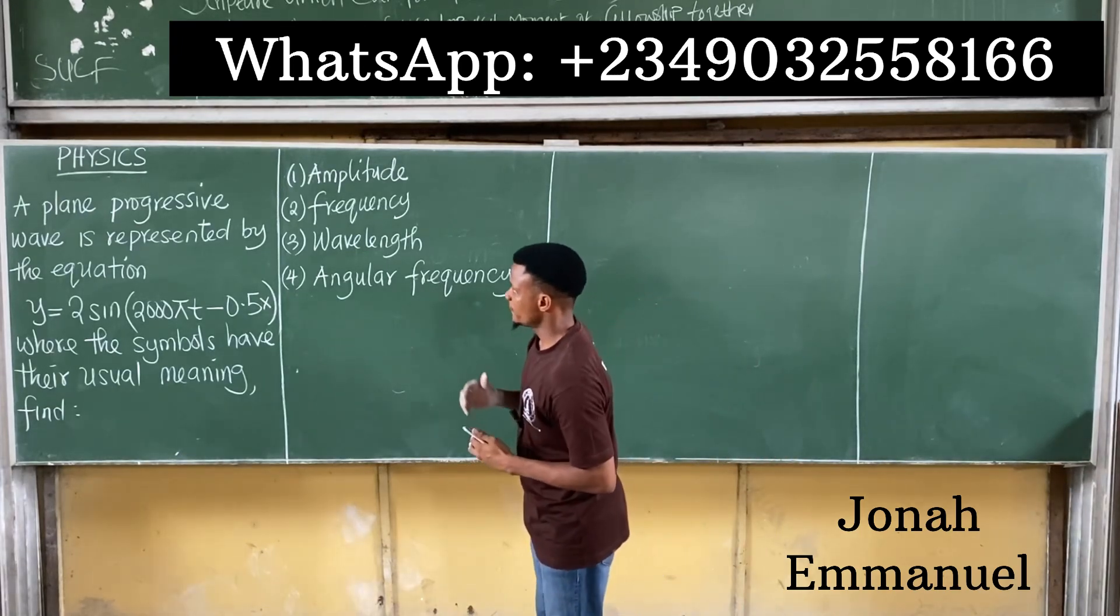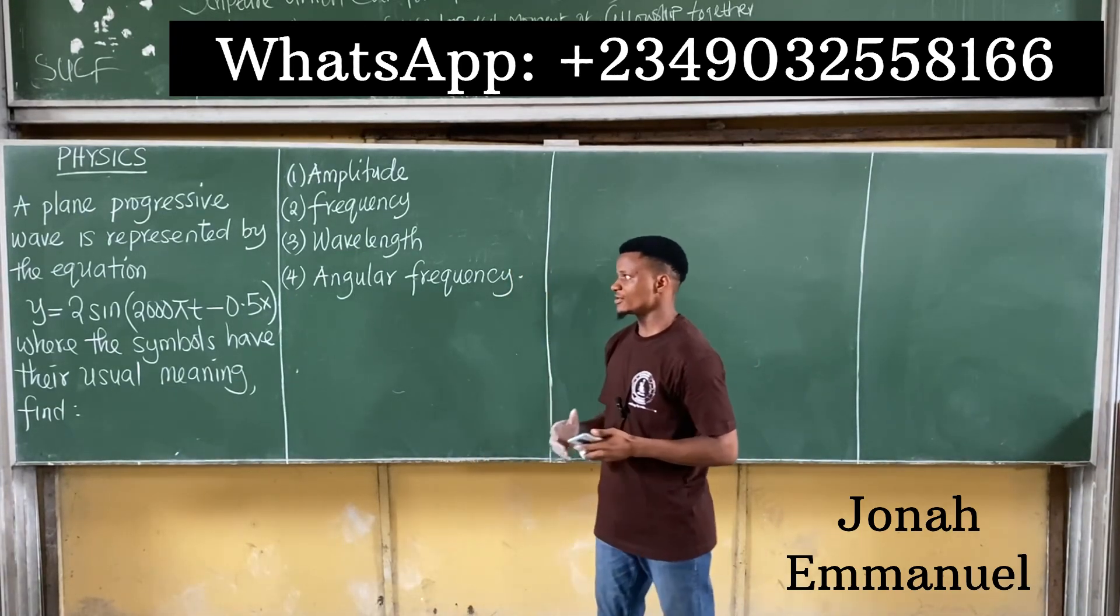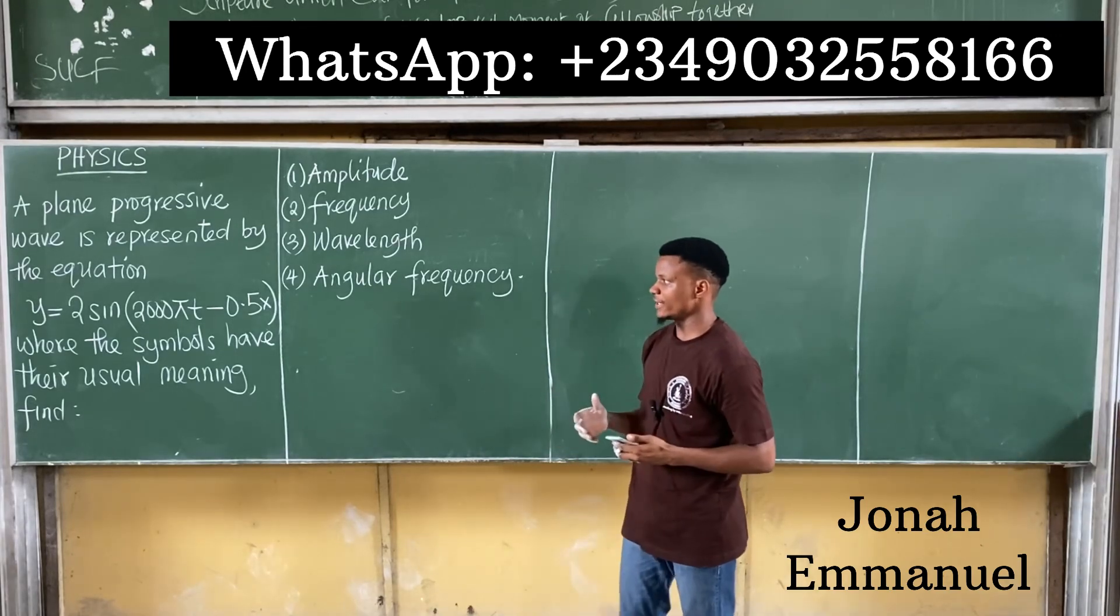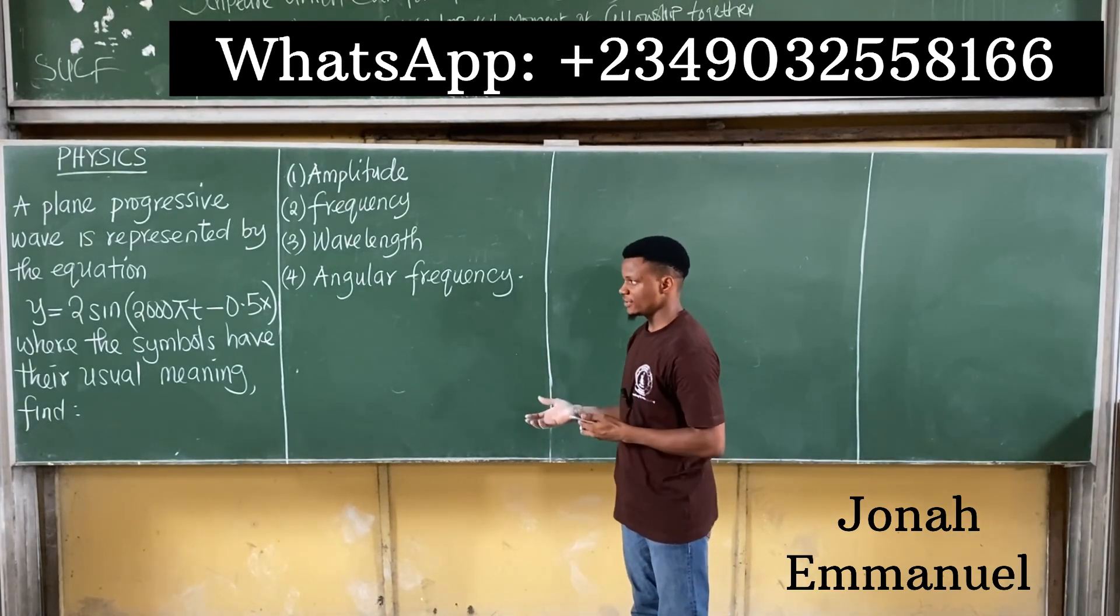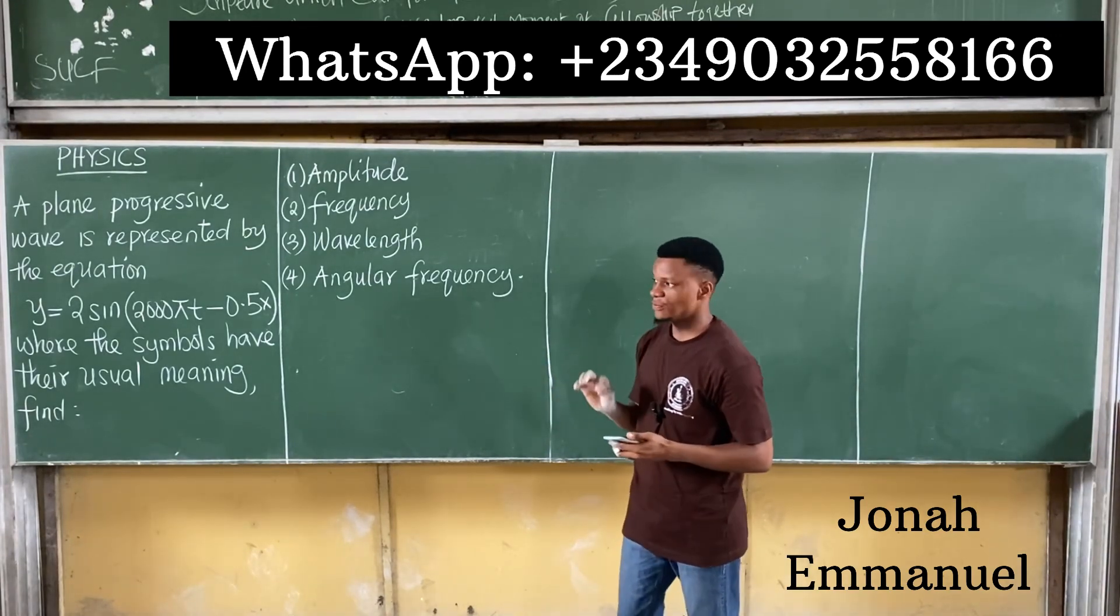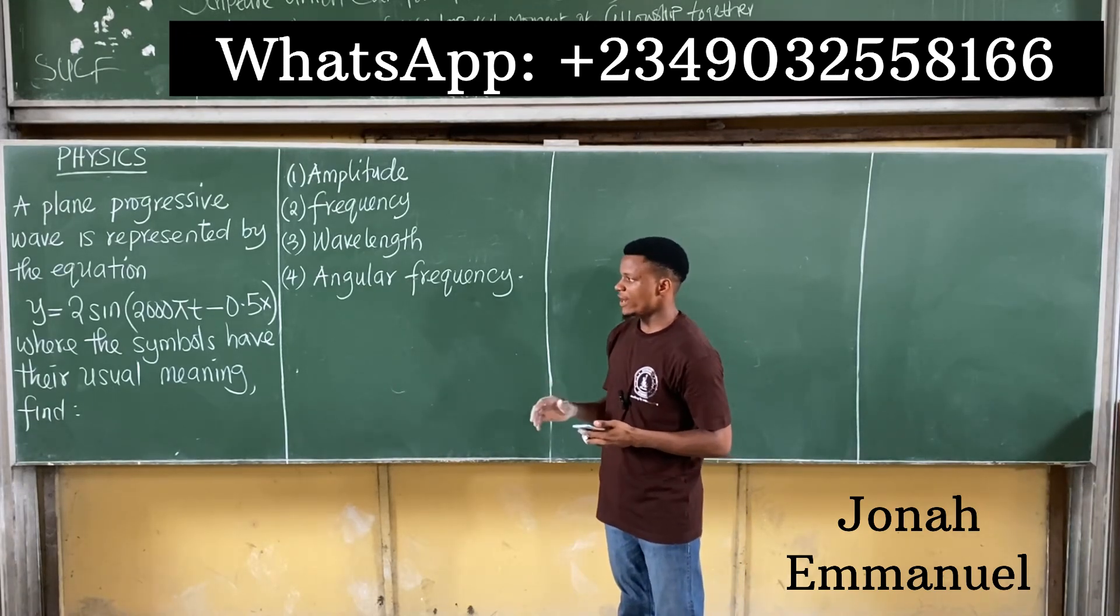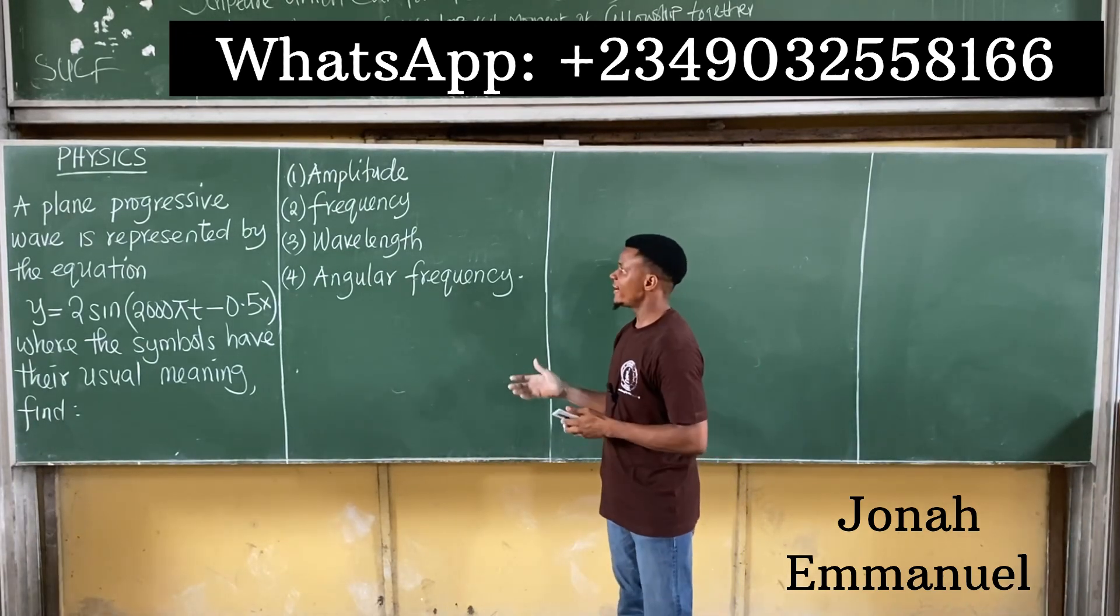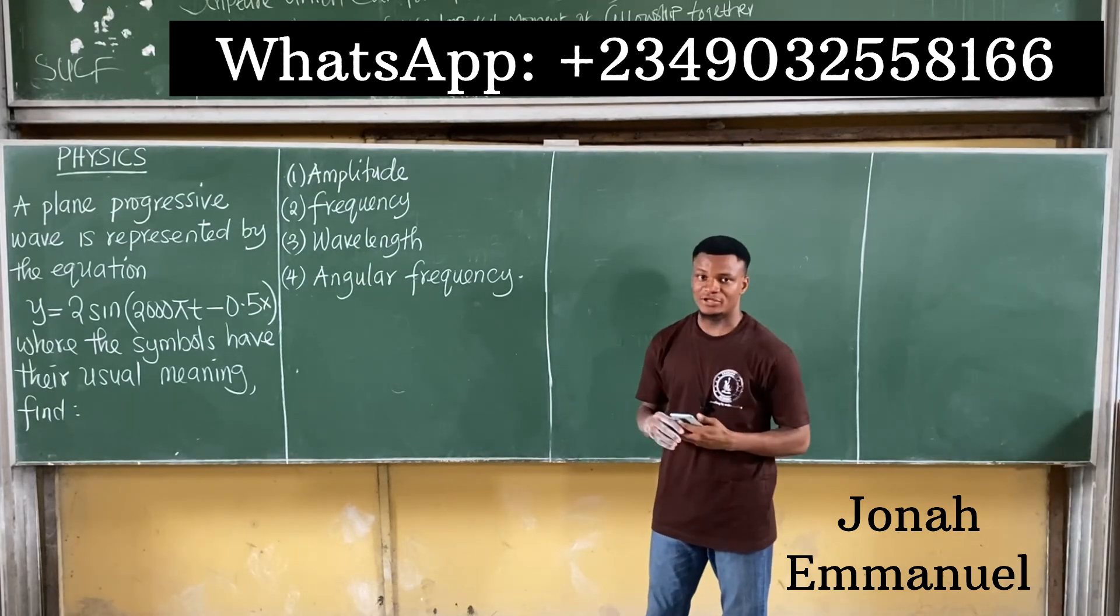The question says a plane progressive wave is represented by the equation y = 2 sin(2000πt - 0.5x) where the symbols have their usual meaning. Find number 1, the amplitude of the wave.